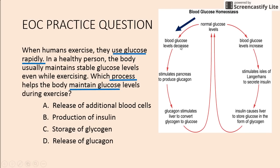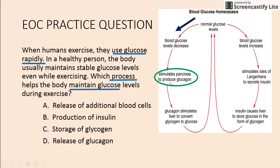As glucose levels decrease, we look for keywords. Release of additional blood cells — blood cells aren't mentioned on the diagram. Production of insulin — insulin is only mentioned when glucose is too high, so it's not B. Storage of glycogen — we don't see anything storing. Release of glucagon — following this side of the arrow, the keyword glucagon appears, and it's only mentioned in answer D. So that's our answer.